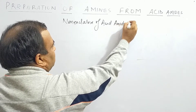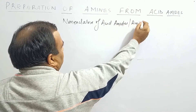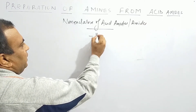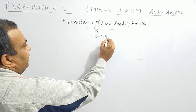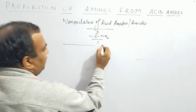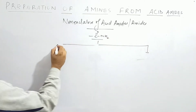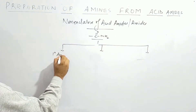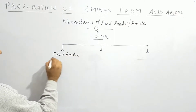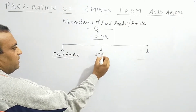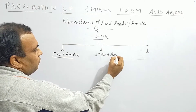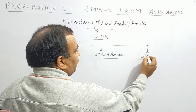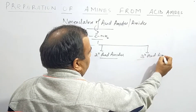These Acid Amides are also said to be Amides. They will have the functional group C=O-NH2. We divide them into three parts: first is Primary Acid Amides, then Secondary Acid Amides, and after that, Tertiary Acid Amides.